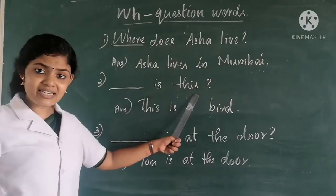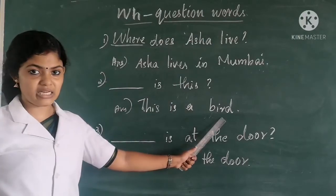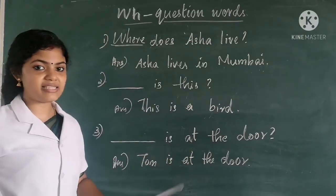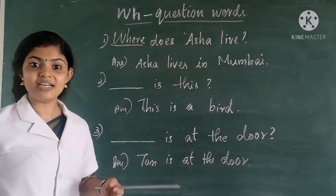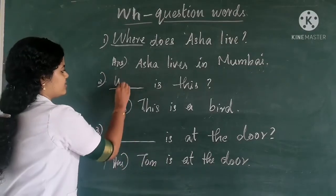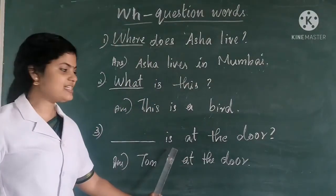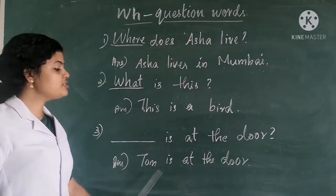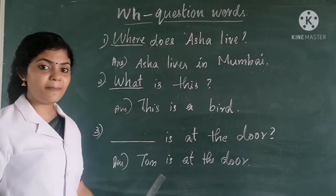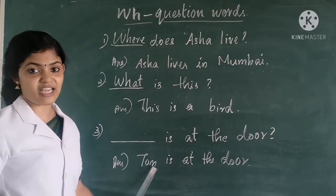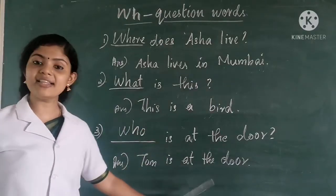Next: Dash is this? Answer — this is a bird. We are asking for information about the bird, so we use WHAT. What is this? This is a bird. Next: Dash is at the door? Answer — Tom is at the door. We are asking about a person, so we use WHO. Who is at the door? Tom is at the door.